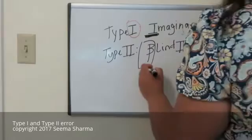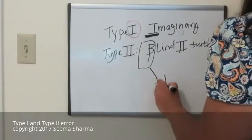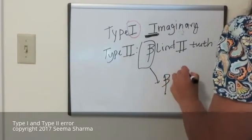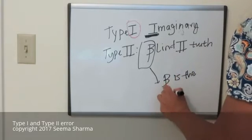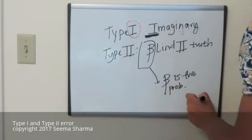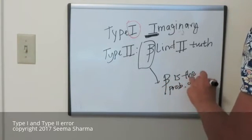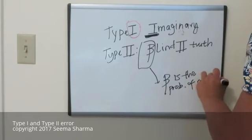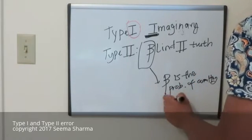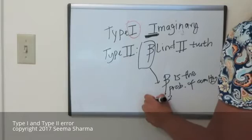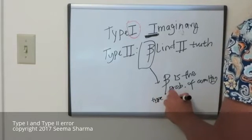It just so happens that beta is a probability of committing Type II error.